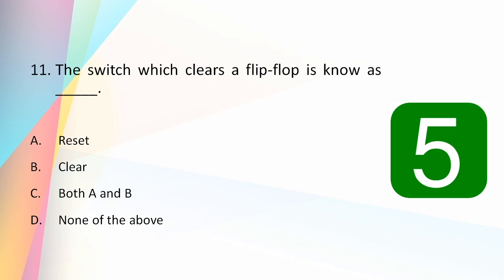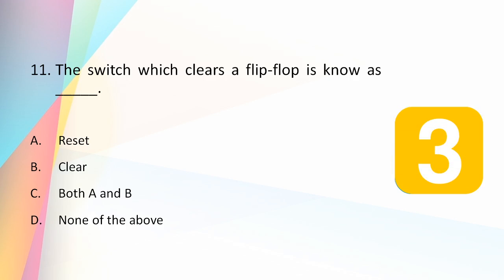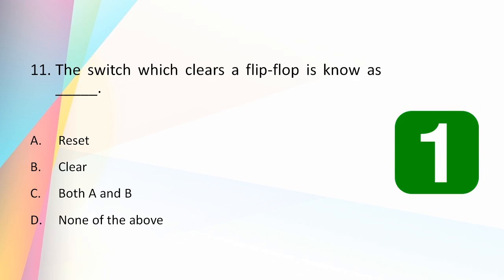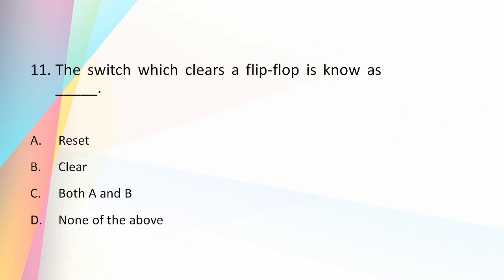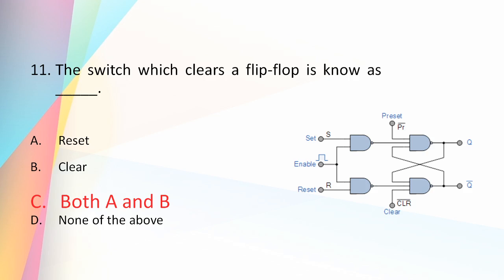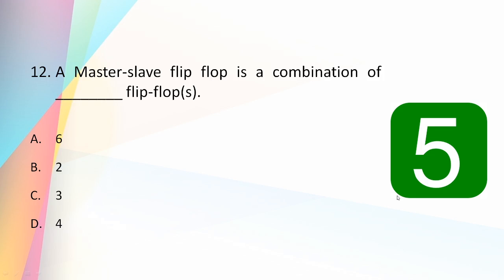The switch which clears a flip-flop is known as: reset, clear, both a and b, or none? The answer is both a and b. The switch that clears a flip-flop can be called either reset or clear, and it makes the output Q equal to 0 and Q-bar equal to 1.